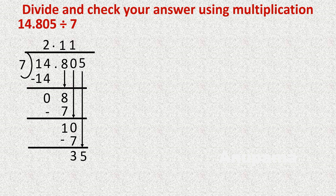How many 7s can fit in 35? 7 ones are 7, 7 twos are 14, 7 threes are 21, 7 fours are 28, 7 fives are 35. So 7 fives are 35 — it is fully divisible. We write 35 minus 35 equals 0. So the quotient is 2.115.